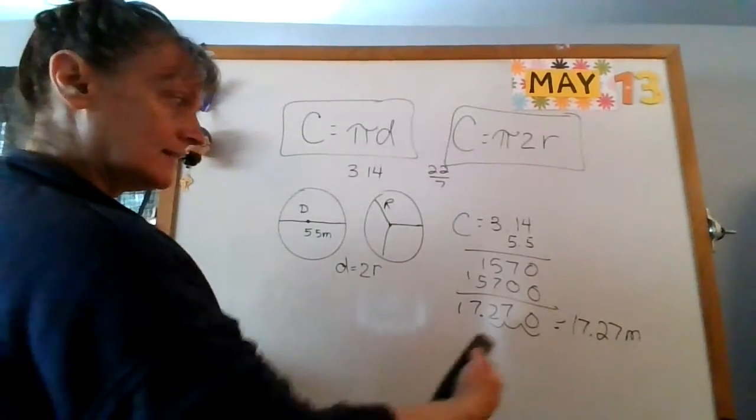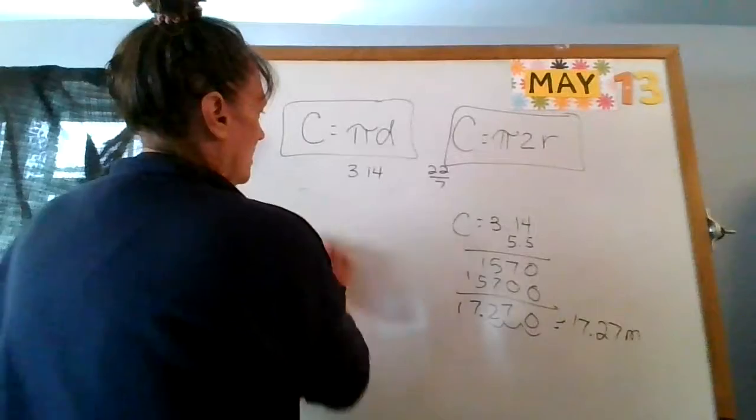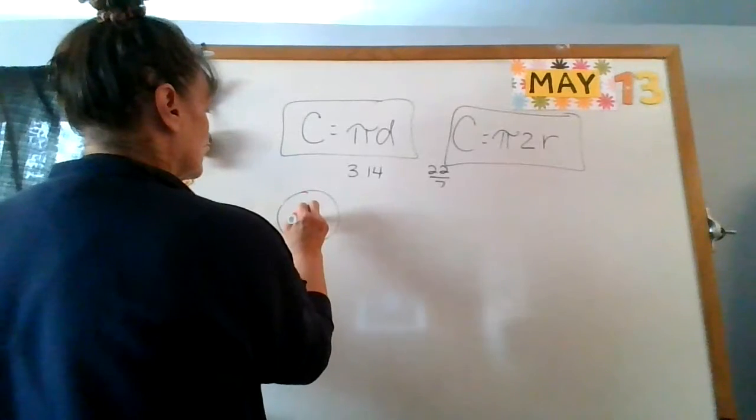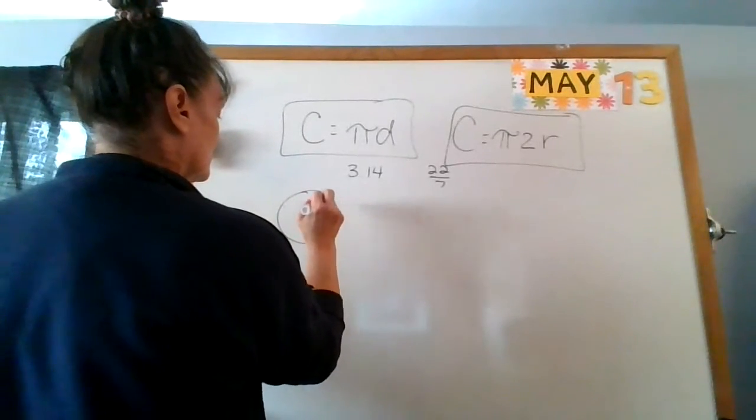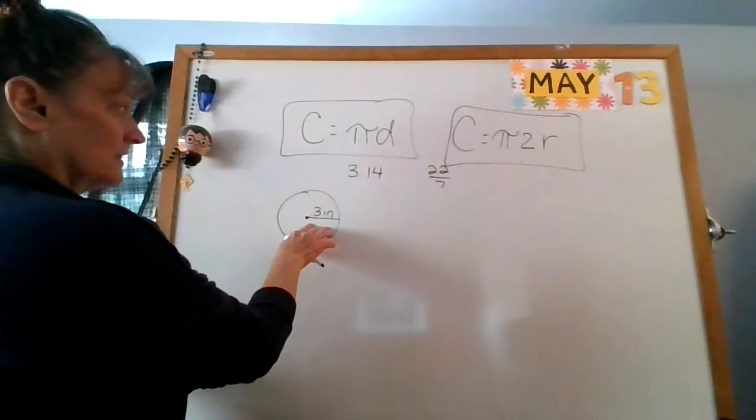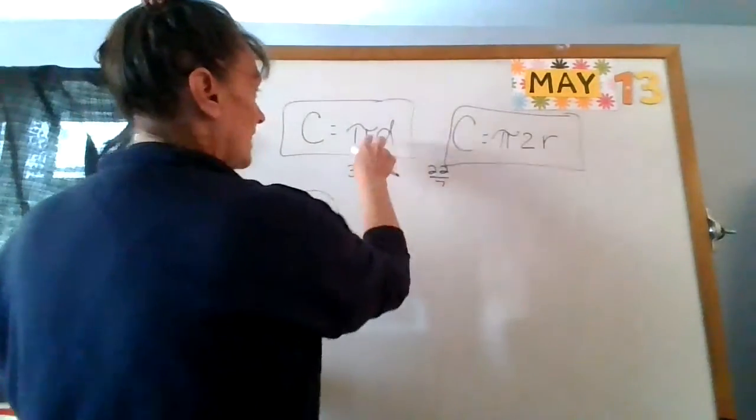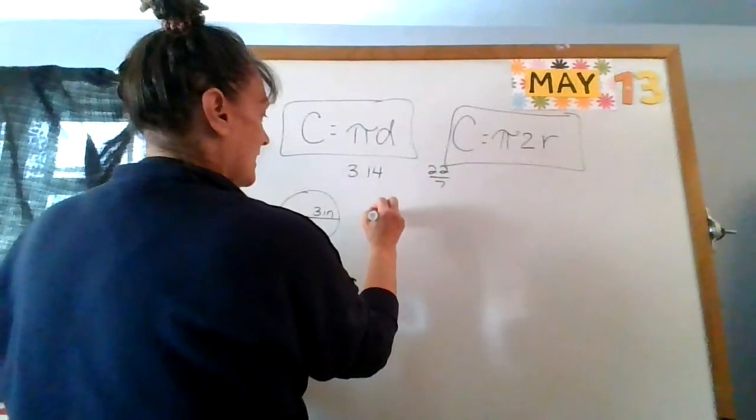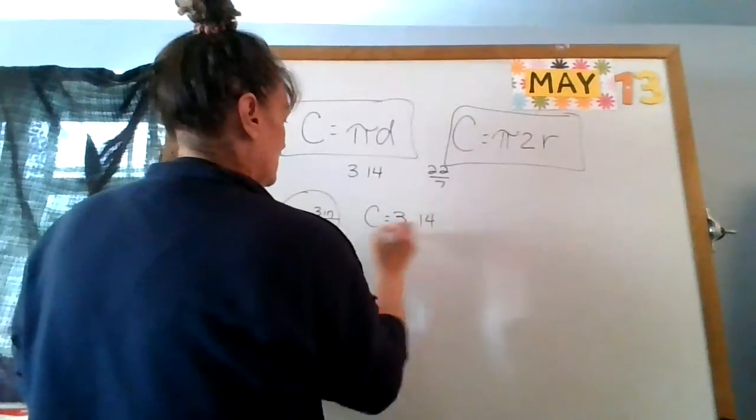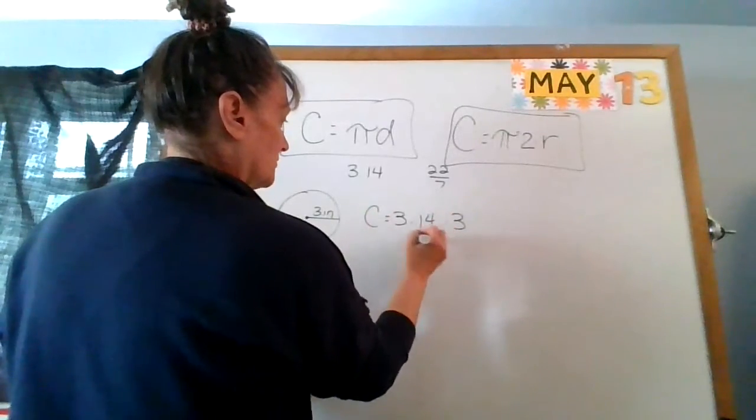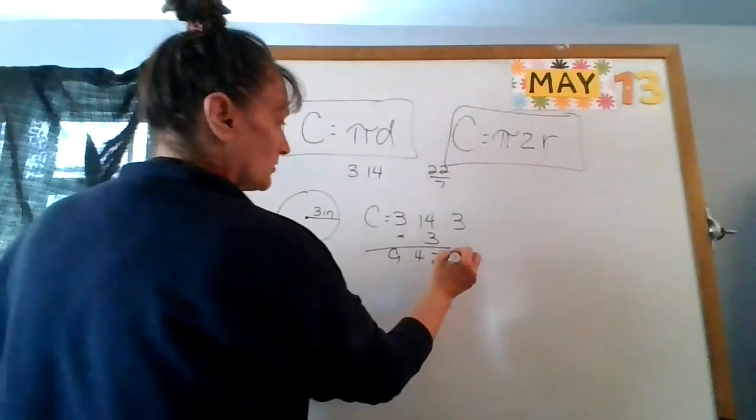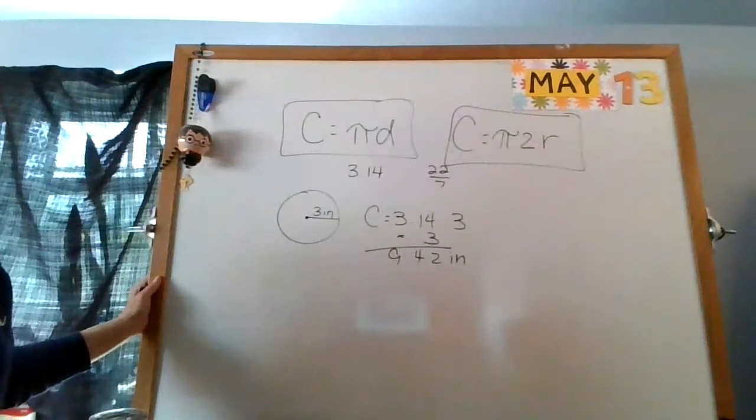All right, does that make sense so far? So let's say they give me one that is radius, three inches. I'm going to ask myself, is this radius or diameter? I'm going to use this one. Circumference is pi, which is 3.14, times three inches. 9.42 inches is my answer. It's really pretty simple.